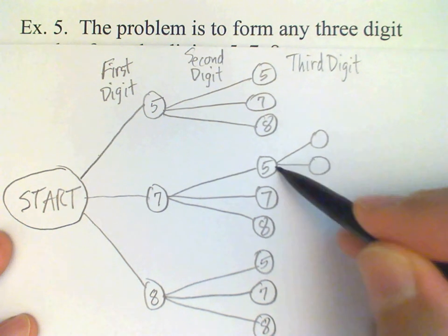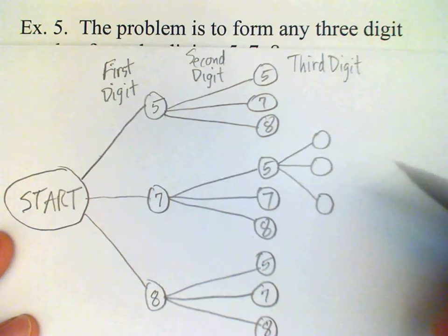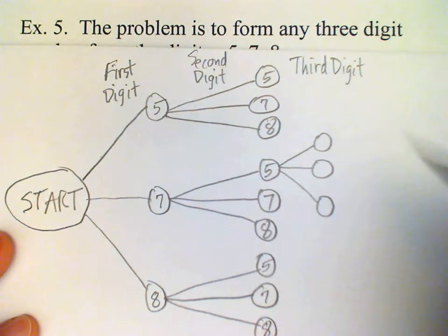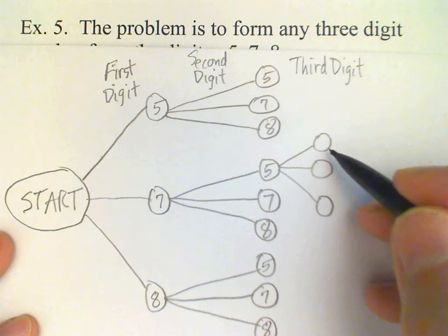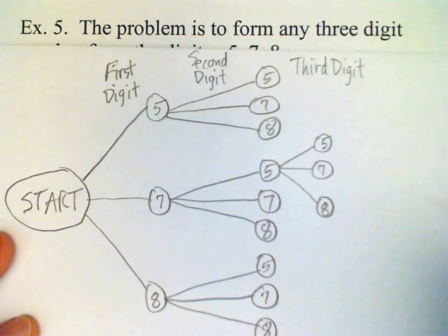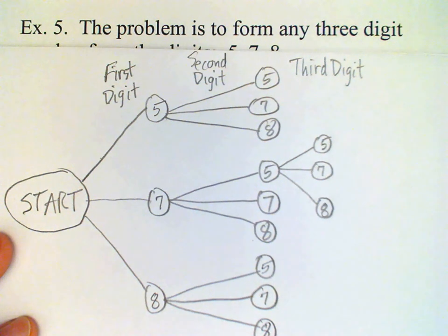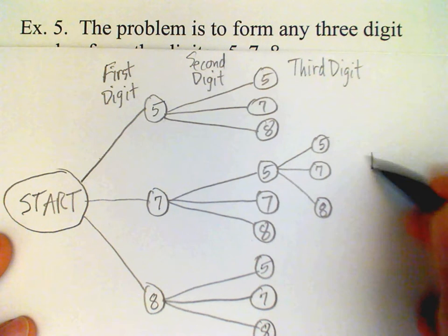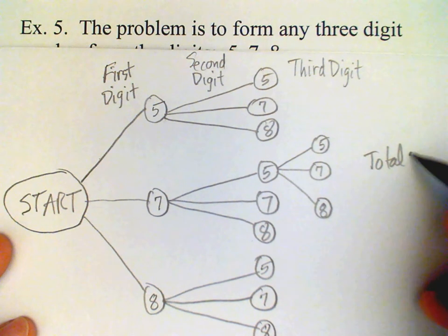But you can see, for example, if I had a 7 first and then a 5, then I could still have a 5, 7, and 8 for my third digit. Okay, and that's going to hold true for each one of these branches, so that gives me a total of 27 possibilities.